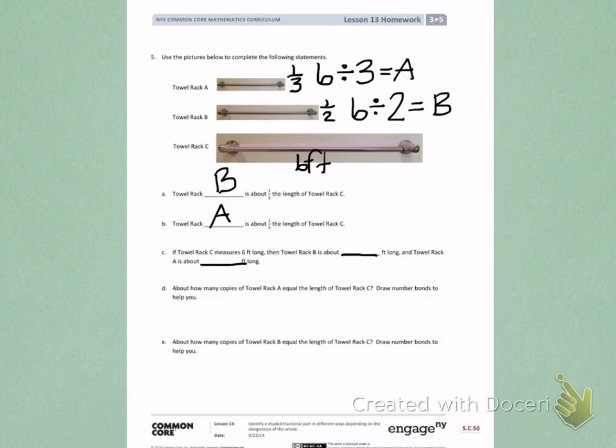Letter D. How many copies of towel rack A equal the length of towel rack C? Draw a number bond to help you. I know that towel rack A equals one third of towel rack C. So if I want it to be equal to one of towel rack C, I'm going to have to copy that one third. So I have one third, two thirds, and three thirds, which gives me one whole length of letter C.